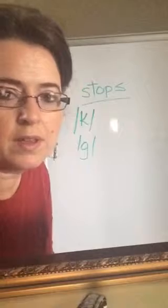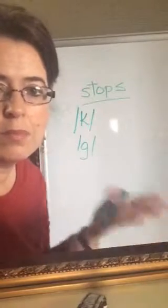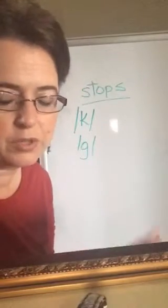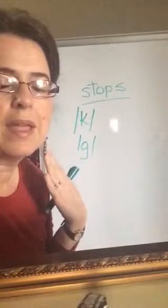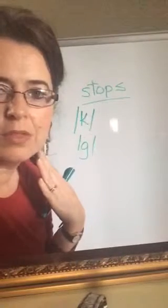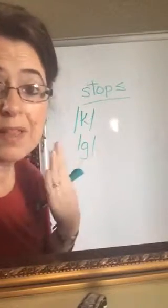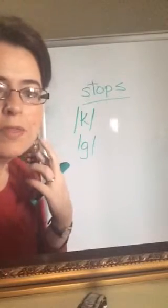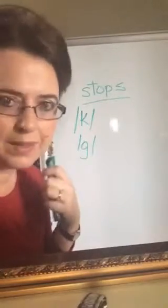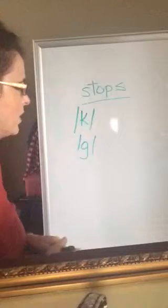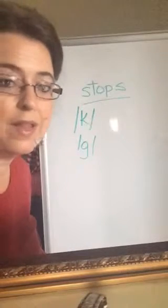And the k and g are made, well, we might talk about the glottal stop too, but the k and g are made the furthest back in the mouth, the furthest back in the oral cavity at the velum, the soft palate. And so k would be any k sound you hear.